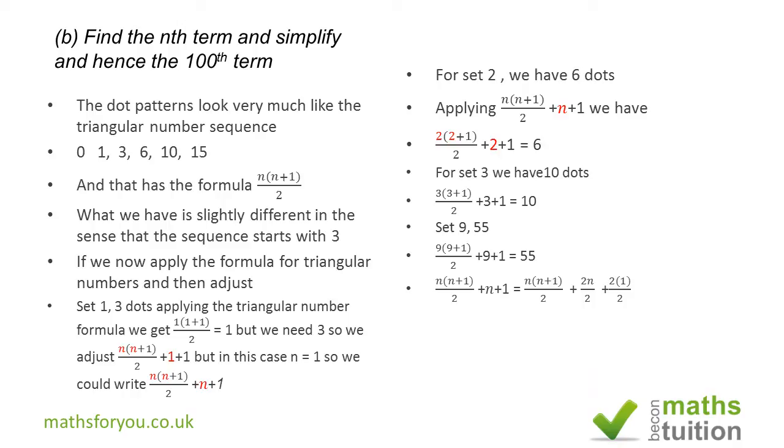Moving on, what we now got is n(n+1)/2 + n + 1. That's the same as saying n(n+1)/2 + 2n/2. If we factor out the half, we have (1/2) times [n(n+1) + 2n + 2]. Opening up the inner brackets, we end up with n² + n + 2n + 2. Collecting like terms, we end up with (1/2)(n² + 3n + 2).